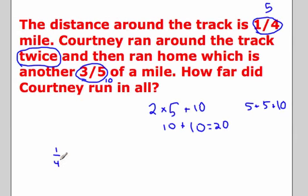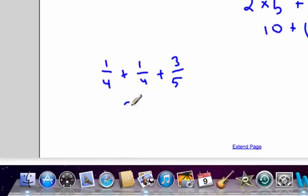One-fourth plus one-fourth plus three-fifths. So that would be our total distance ran. And one-fourth plus one-fourth, that's pretty easy to add. You don't have to change the denominators. That's two-fourths.